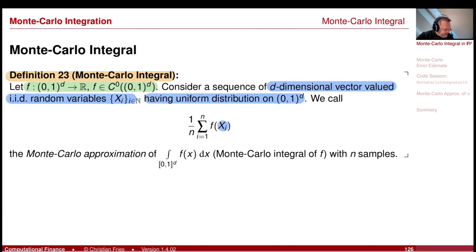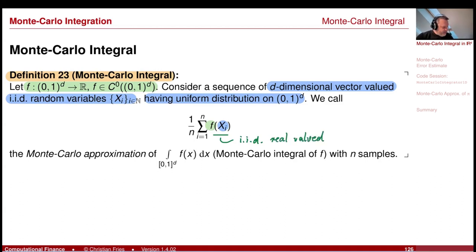On these, I apply the function f. Note that f of xi is iid and in R, so this thing here is iid real-valued. From that, I take my Monte Carlo average, and this we call the Monte Carlo approximation of this d-dimensional integral of f of x dx.